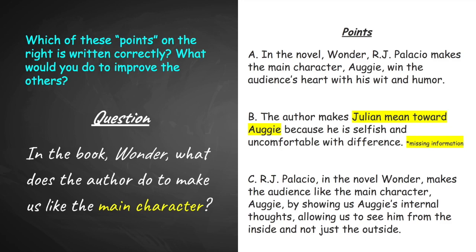The second example reads: the author makes Julian mean towards Augie because he is selfish and uncomfortable with difference. Hopefully you identified that this point is missing a lot of information — it's supposed to have the text title and the author's name, and it's supposed to use keywords from the question. In fact, this point draws attention away from the character we're supposed to be focused on. The question is focused on the main character, but this point talks about Julian being mean towards Augie.